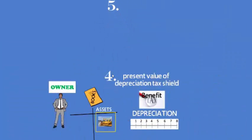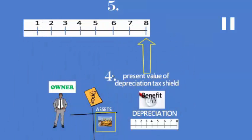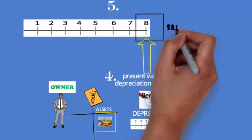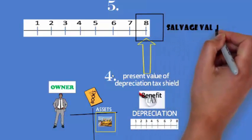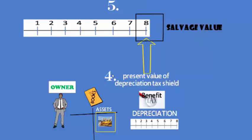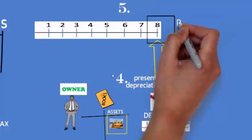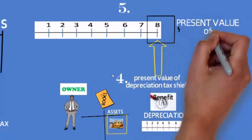The fifth and last factor: this asset will have a salvage value at the end of its life — say, for example, eight years. At the end of eight years, there will be a salvage value which he can get after selling that asset. That value is after eight years, so we will have to calculate the present value of the salvage.